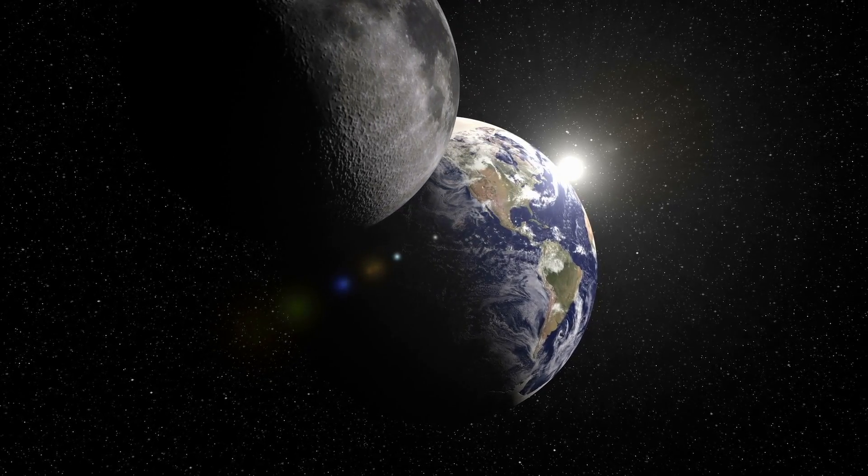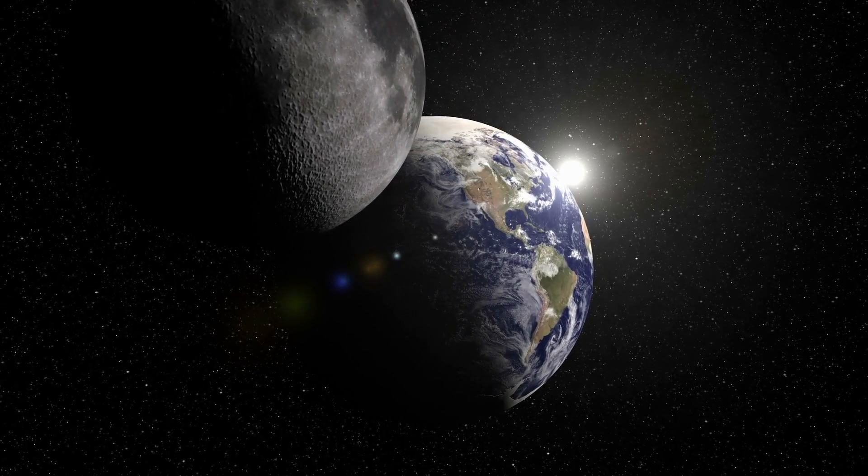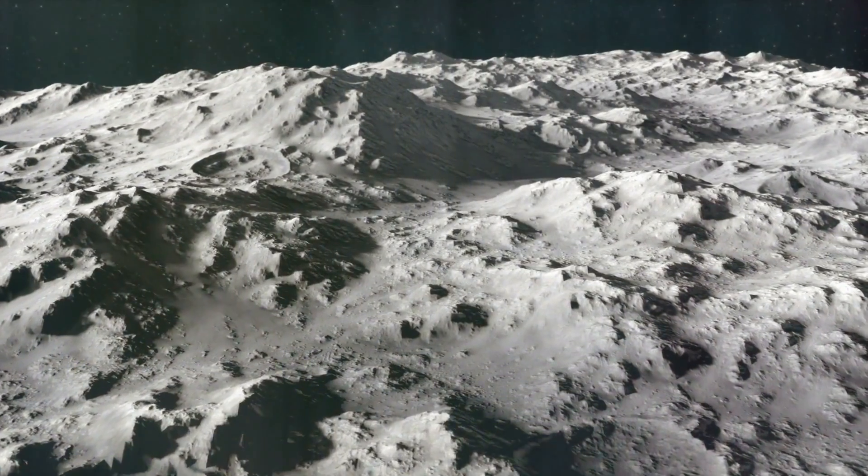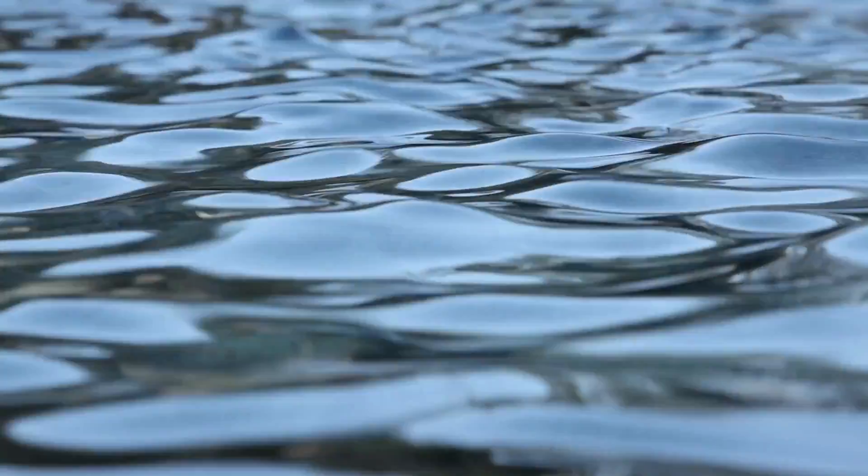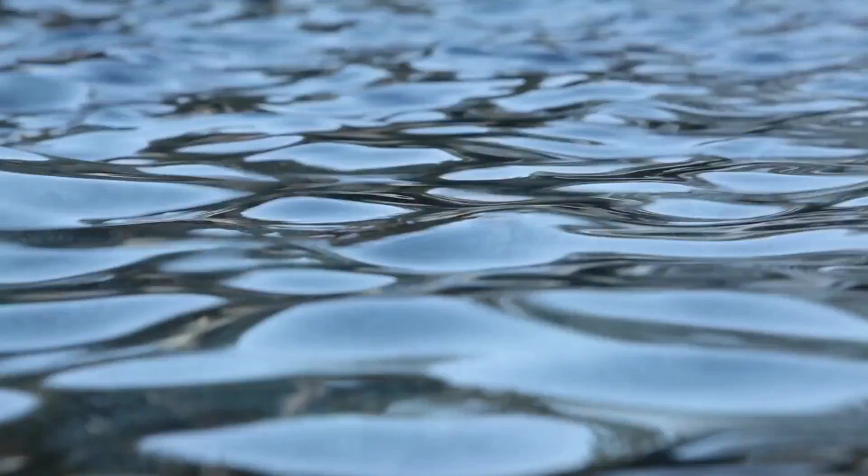The Earth is orbited by a celestial body we call the Moon. Its existence affects life on our planet. For example, the ebb and flow of the tides can be traced back to the Moon.